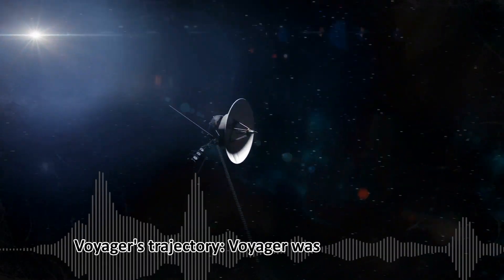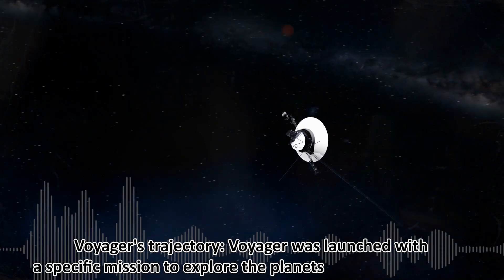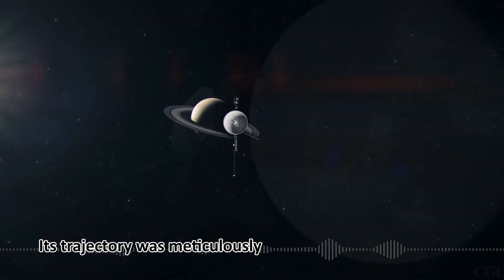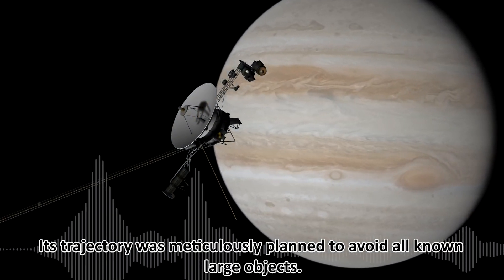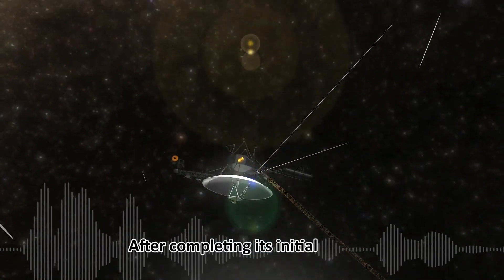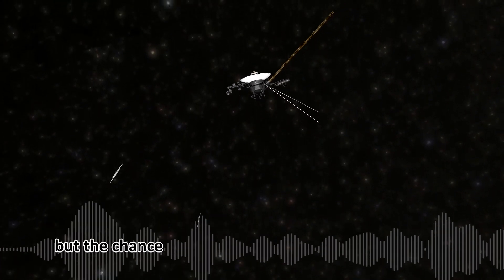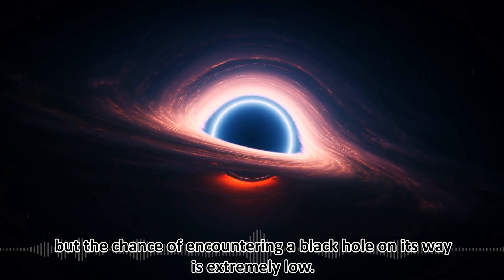Voyager was launched with a specific mission to explore the planets of the solar system. Its trajectory was meticulously planned to avoid all known large objects. After completing its initial mission, it continues to travel through interstellar space, but the chance of encountering a black hole on its way is extremely low.